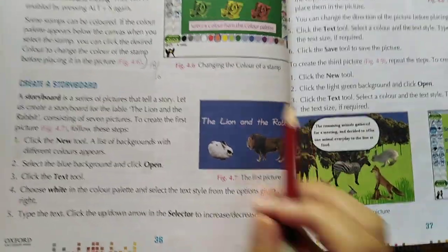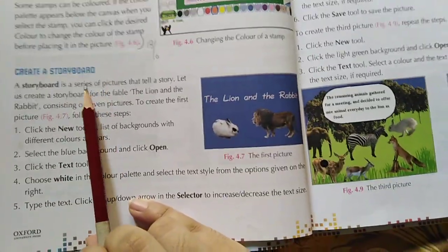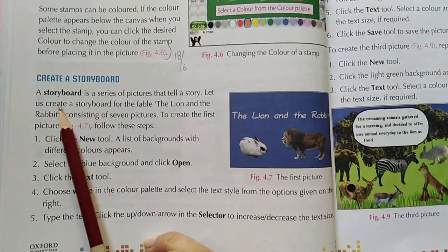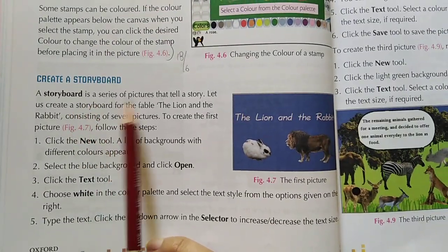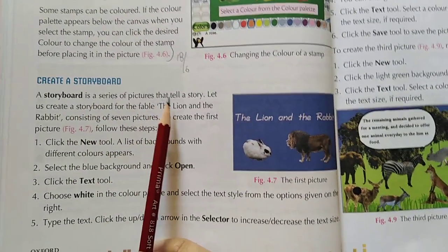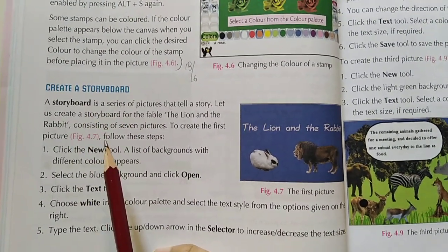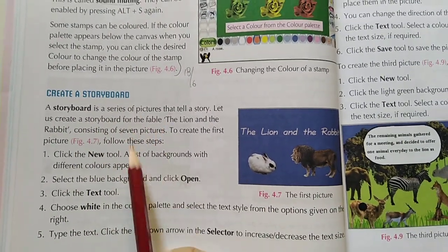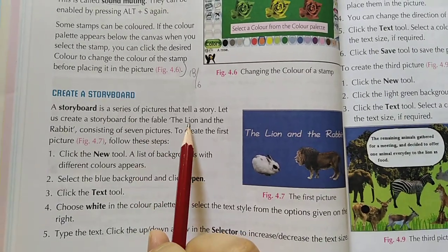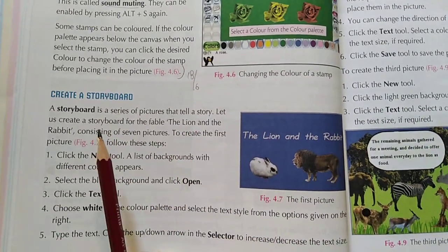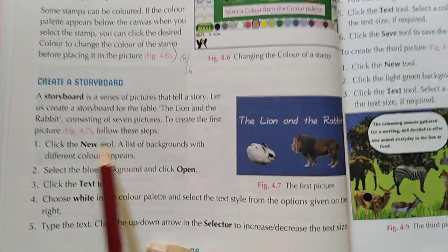Assalamu alaikum students, today's topic is to create a storyboard in Tux Paint. The story mode is like storytelling in the computer. You can create stories, for example, in this example they are going to create The Lion and the Rabbit story, which consists of seven pictures.